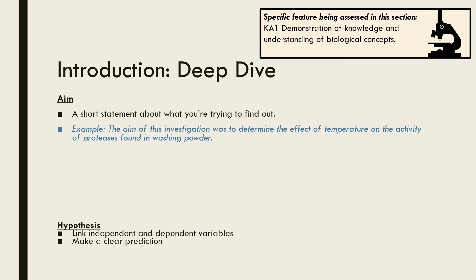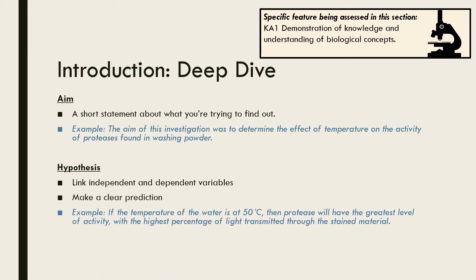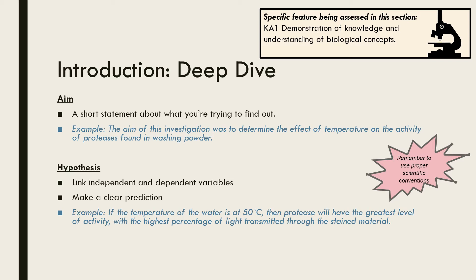Next comes the hypothesis. Your hypothesis needs to link the independent and dependent variables and make a clear prediction. It can be helpful to write the hypothesis as an if-then statement. For example: if the temperature of the water is at 50 degrees Celsius, then protease will have the greatest level of activity, with the highest percentage of light transmitted through the stained material. Notice that the student hasn't only identified the independent and dependent variables, but has also stated how the dependent variable is being measured.